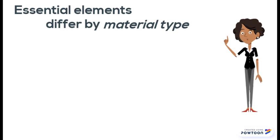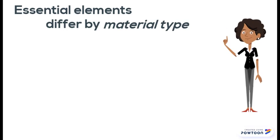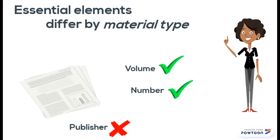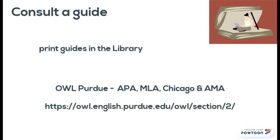One final note: the information needed to locate a source does differ depending on what type of material it is. For example, you don't need to know the name of the publisher for a journal article to track it down, but you do need to know its volume and number. To find out exactly which bits of information are required, consult the official style guide or a high-quality online guide such as you'll find on the OWL Purdue website.